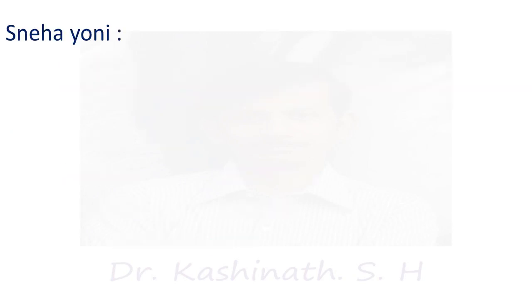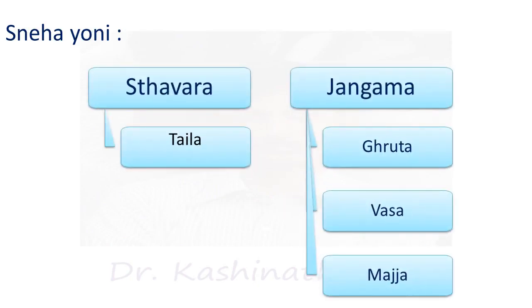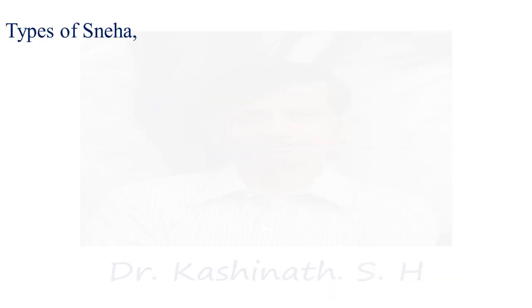Sneha Yoni refers to the source of the Dravya Sneha. Two sources exist: the first is Stavara and the second is Jangam. In the Stavara category, Tayla comes, and Parasha in the Jangam category. Then we come to the types of Sneha.